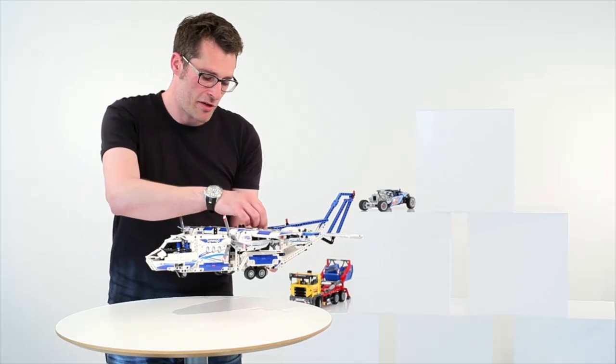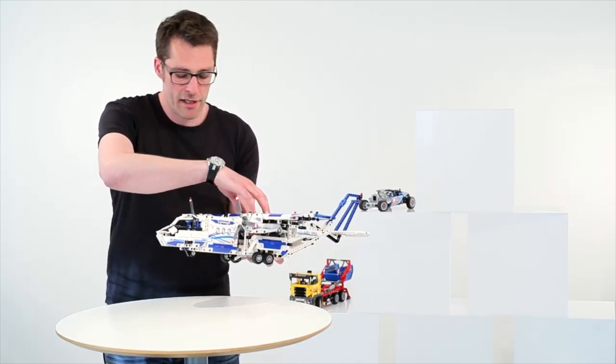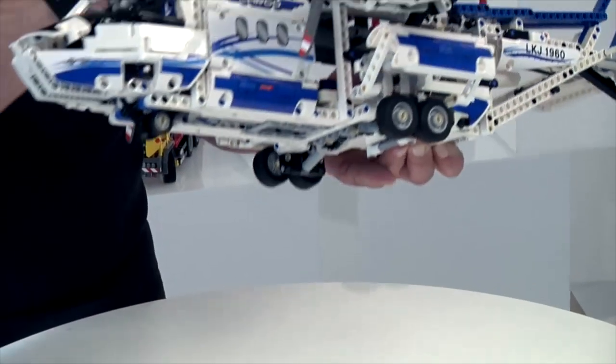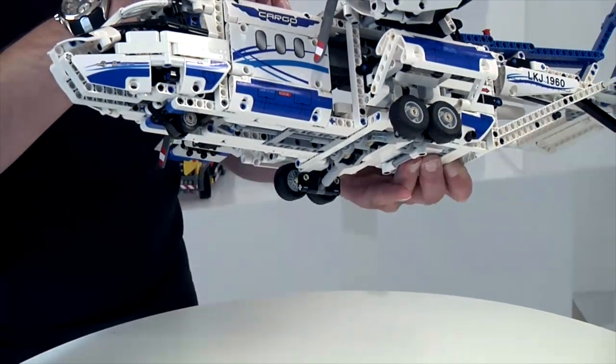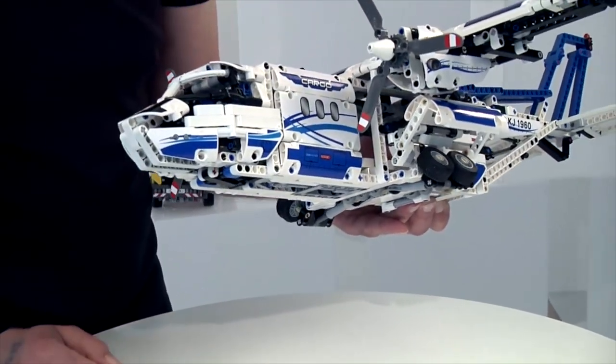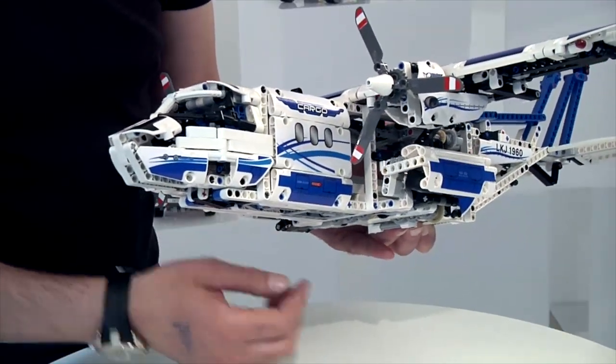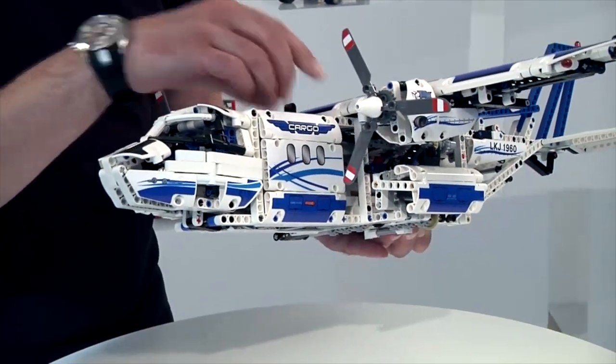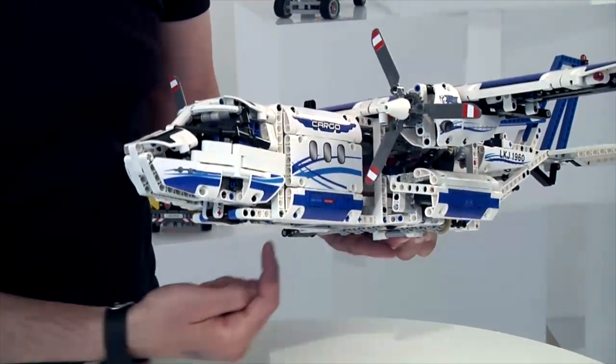Another power functions function that we have on the model is also the landing gear that you can retract. Like this. And it actually folds up into the airplane. So that it is hidden up here.